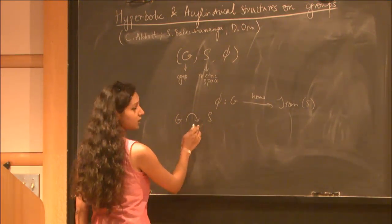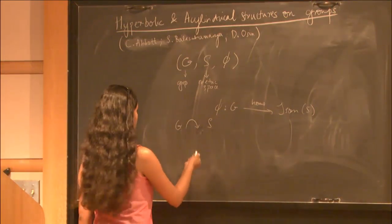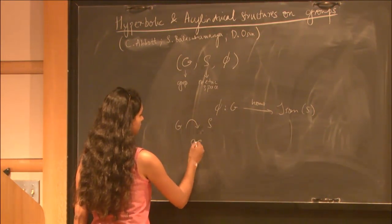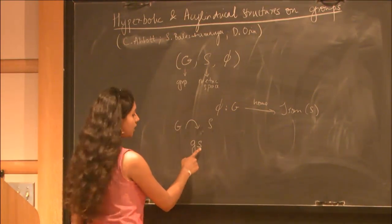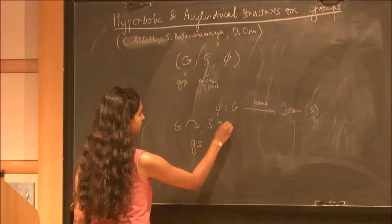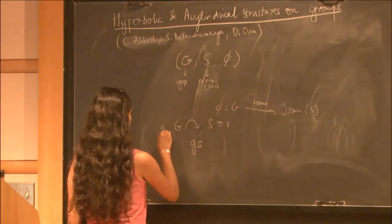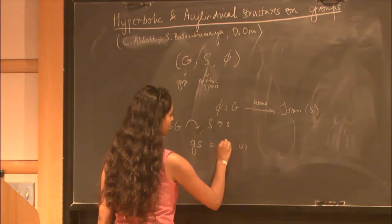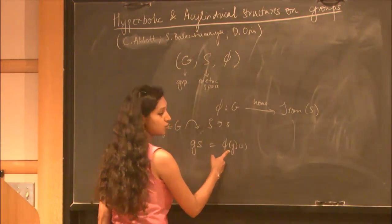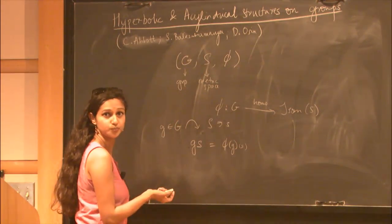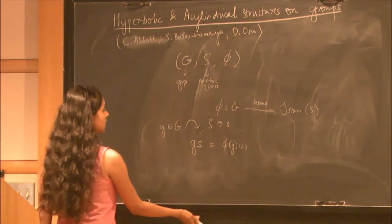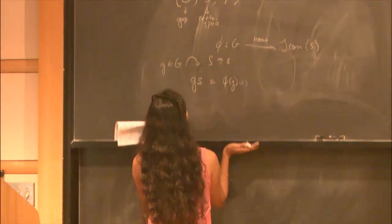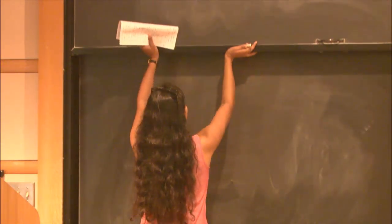We sometimes completely omit φ if the action is obvious. The other notation we use is: an element g of our group acts on an element s of our space, which is understood to be the image of s under the isometry that g maps to.